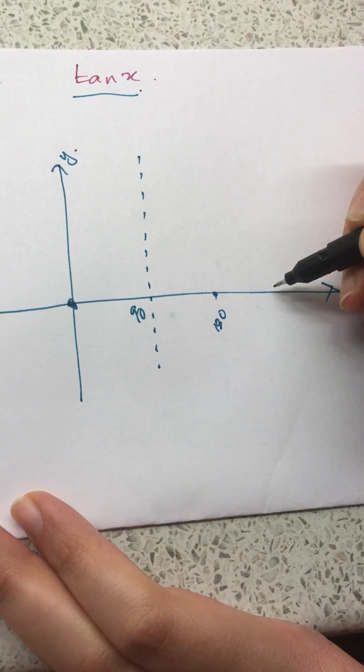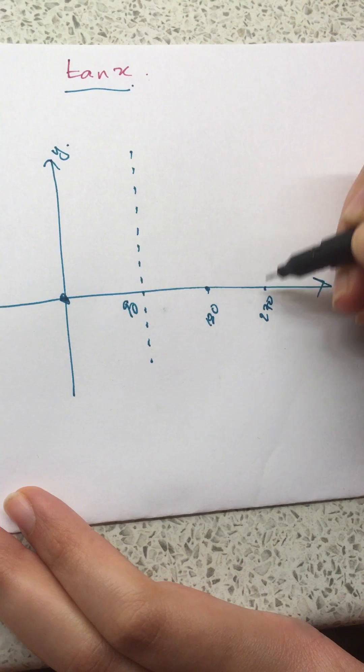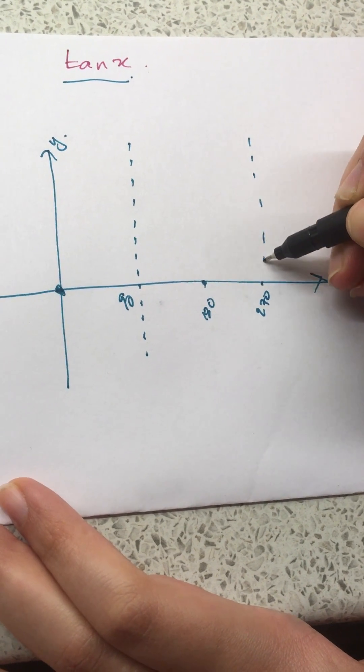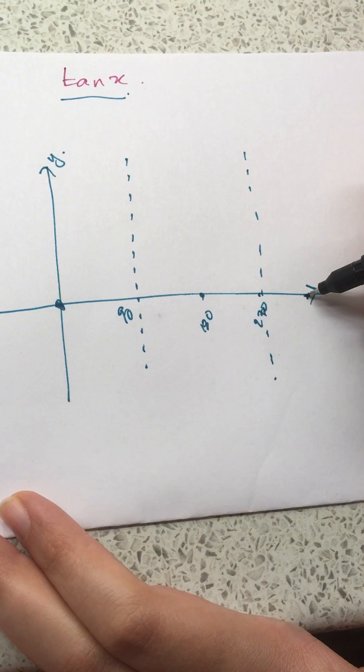An asymptote at 270, so a dotted line, and it will go through 360.